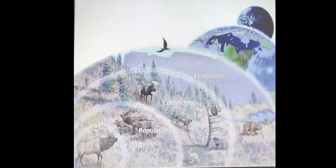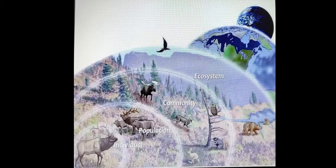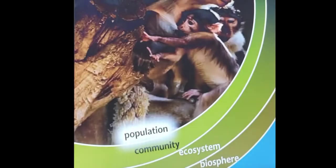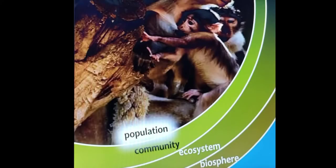After community, population. A population is made up of only one kind of animal, or plant, or any other living being known as species. For example, in a monkey population all are the same species, or in a human population, all are human.